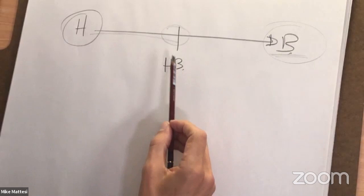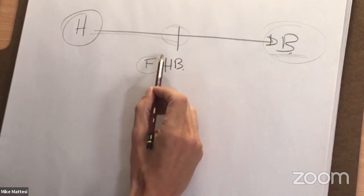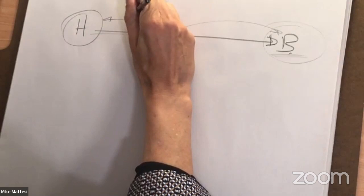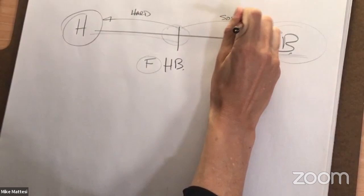You have B on one side, H on the other, and HB in the middle. As you go up in number toward the H side it gets harder, and as you go up in number toward the B side it gets softer. Hardness goes this way, and the leads get softer this way.